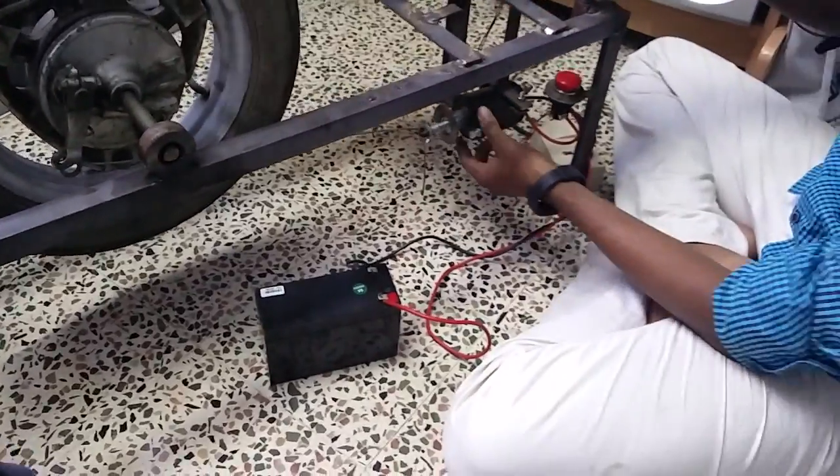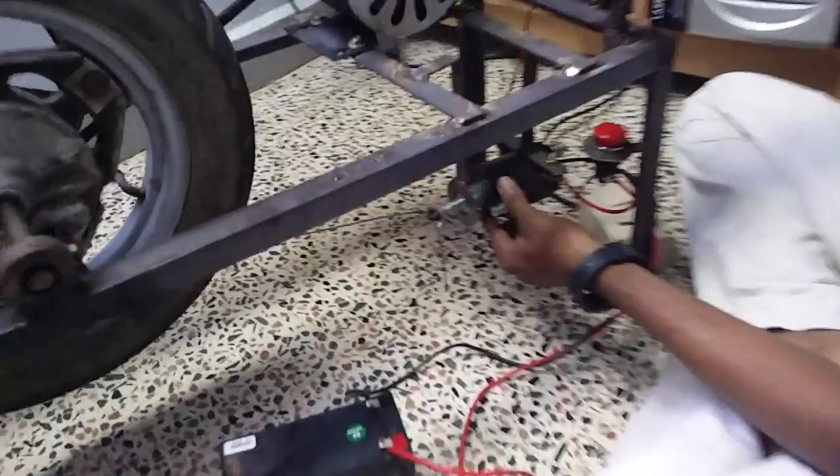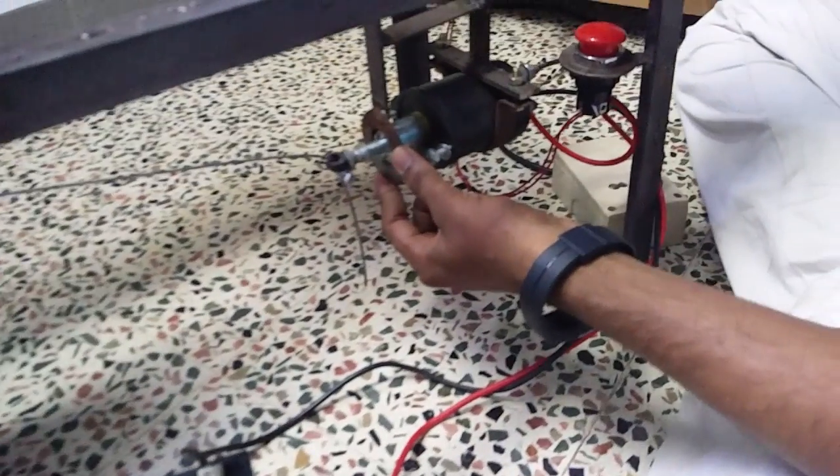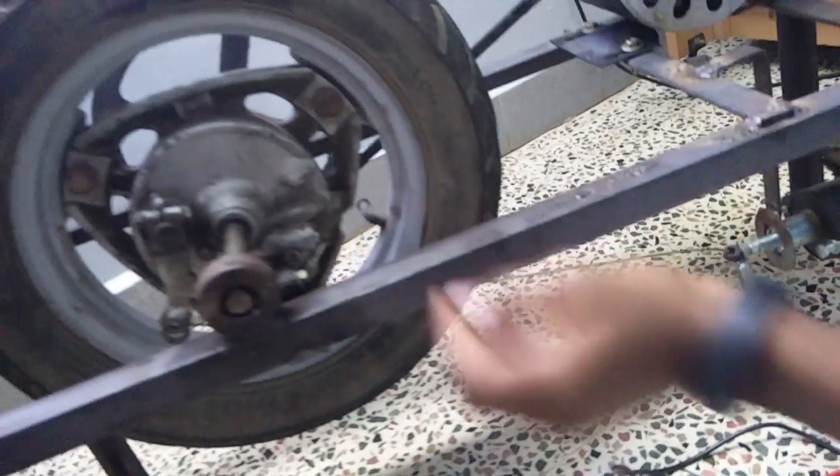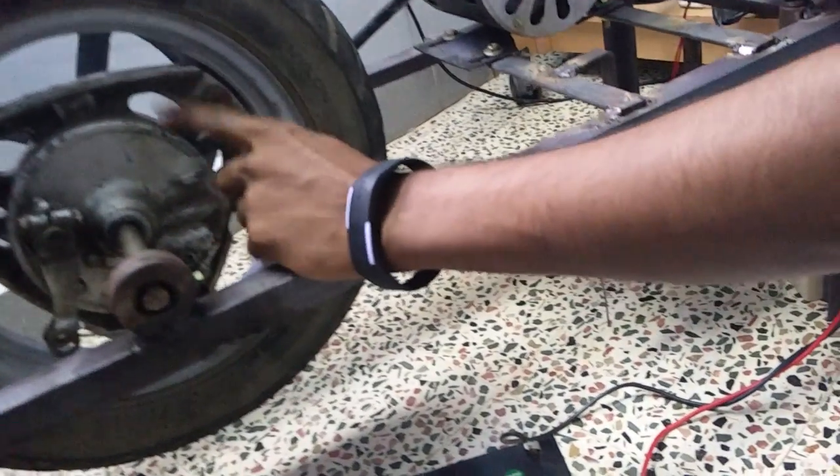When the electric current is closed, the coils inside get magnetized. Once magnetized, the pull rod here is pulled by the electromagnet. Once it gets pulled, it pulls the brake wire. Once the brake wire is pulled, it actuates the brake drum. In this way, the brake can be applied.